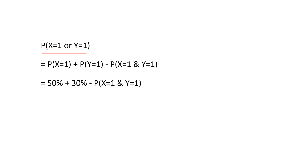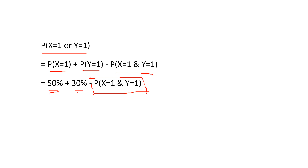We can write P(X=1 or Y=1) = P(X=1) + P(Y=1) minus P(X=1 and Y=1), using the inclusion-exclusion principle. We are given P(X=1) = 50% and P(Y=1) = 30%, but we don't know P(both bonds defaulting). However, we can estimate the range of that joint probability.